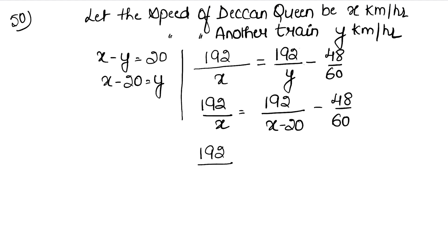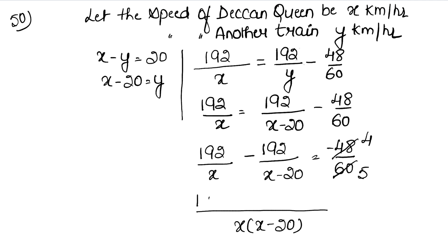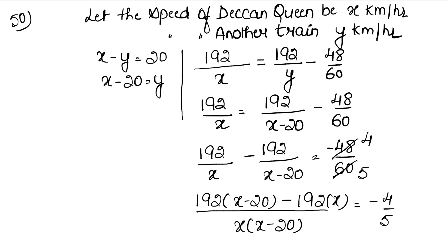Simplifying 48 over 60: since 12 times 4 is 48 and 12 times 5 is 60, this reduces to minus 4 over 5. Finding the LCM of x and (x minus 20), which is x(x minus 20): we get 192(x minus 20) minus 192x, all over x(x minus 20), equals minus 4 over 5.